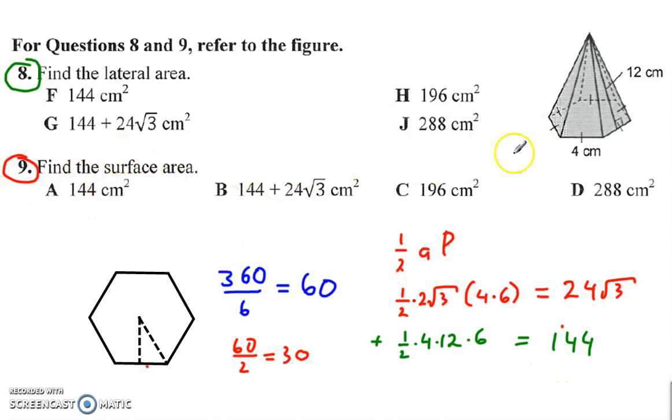For the surface area, we have to find the area of the regular polygon down here. And since this is a hexagon, we take 360 divided by six to get the central angle. That would be 60 degrees. Divide that by two to find this angle. That's 30 degrees, which makes this a 30, 60, 90.